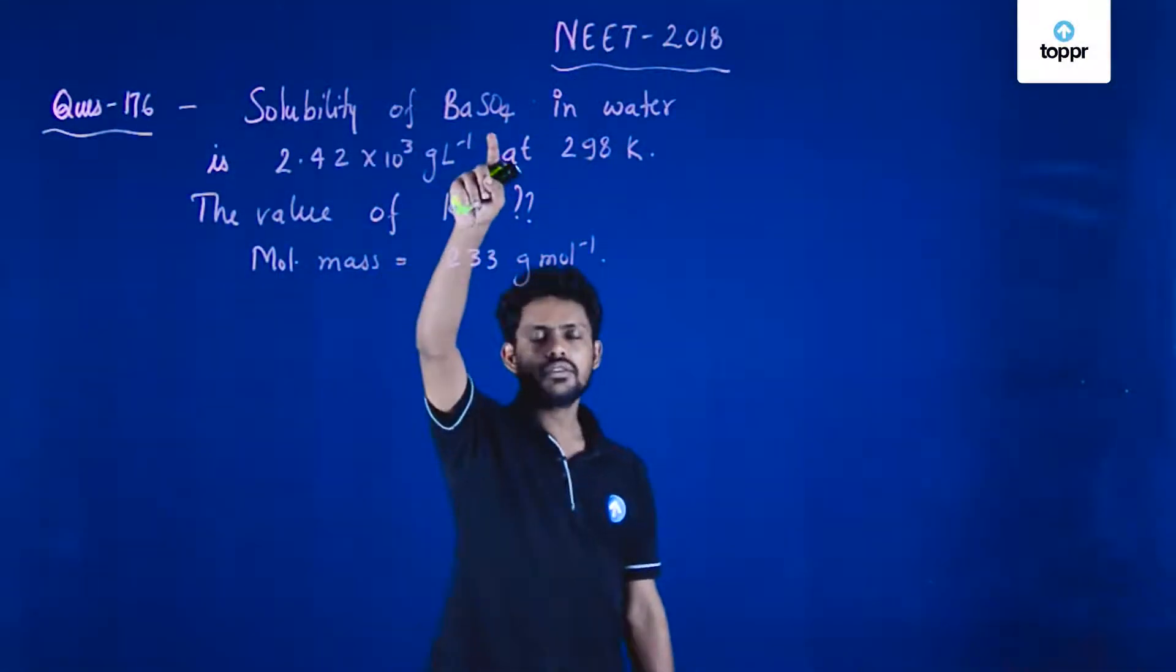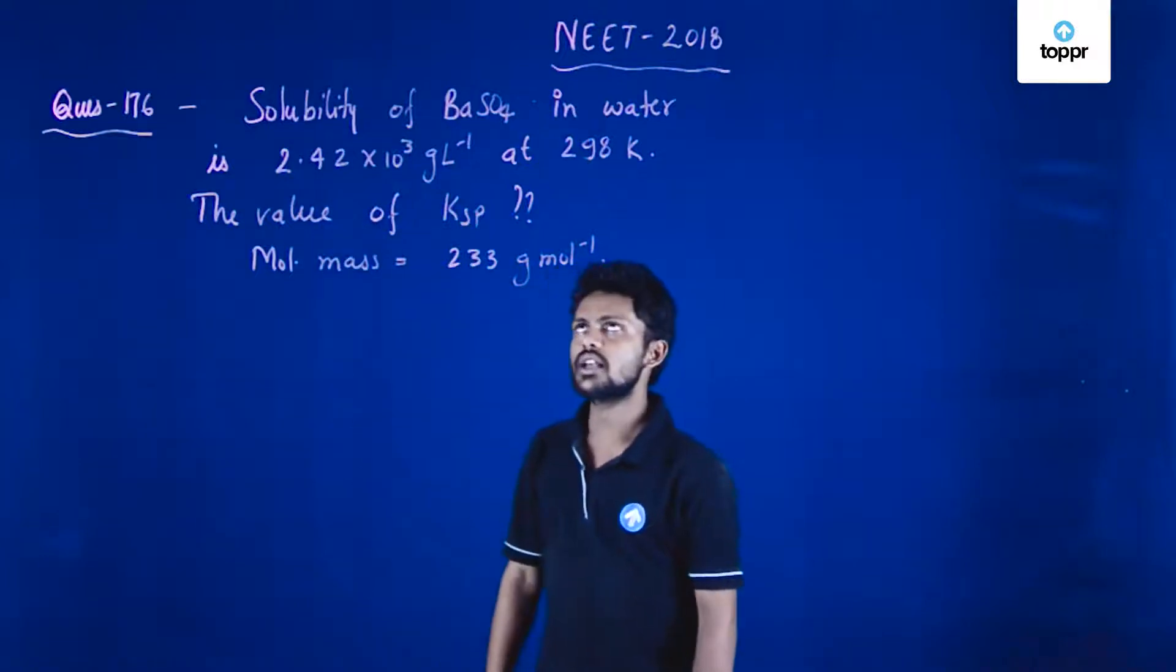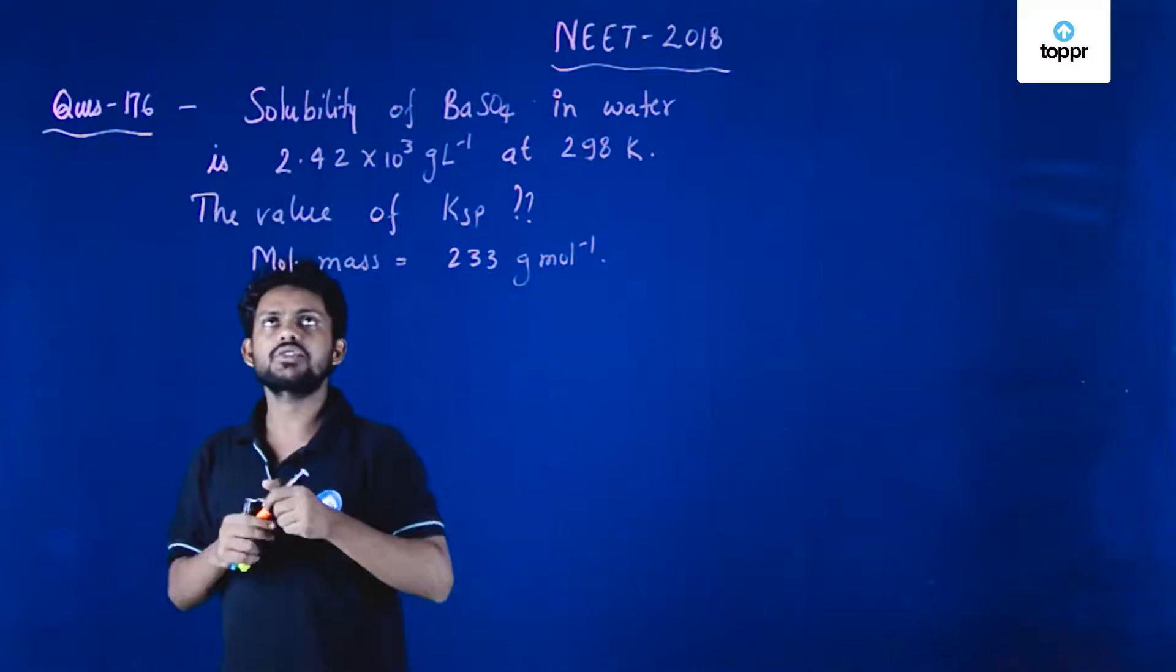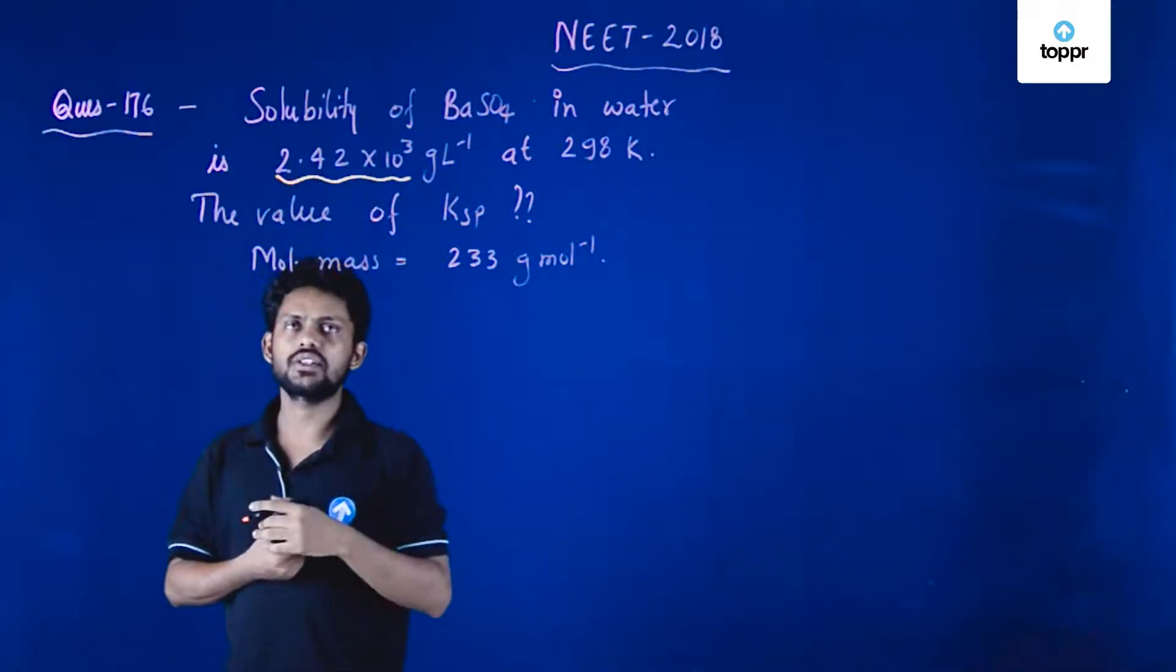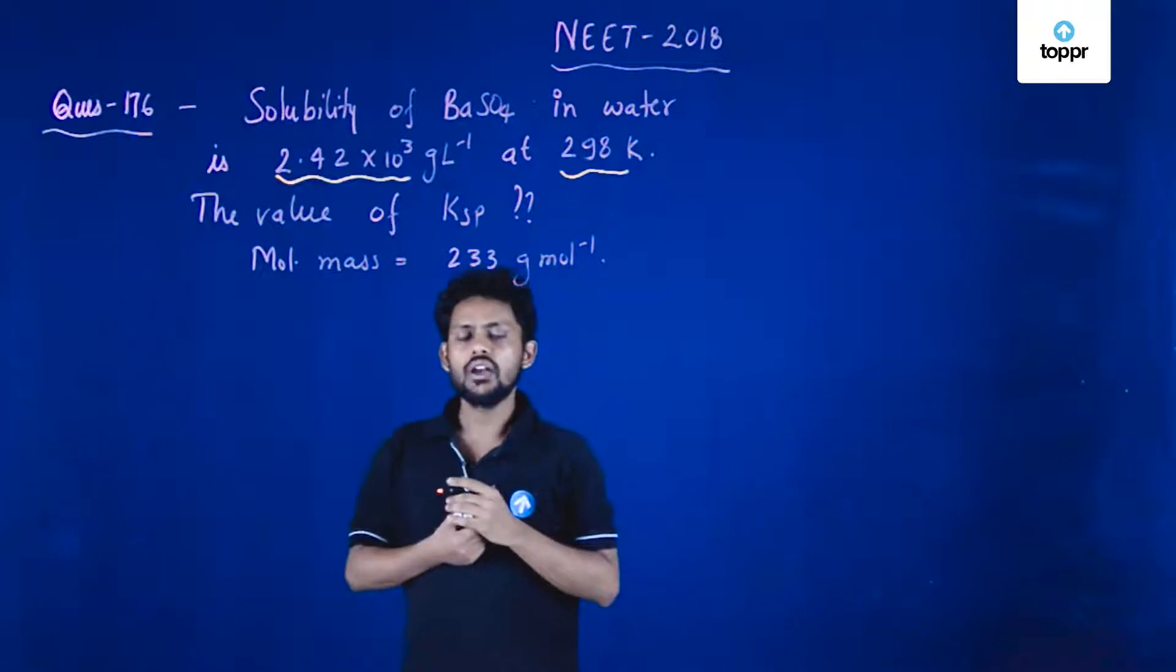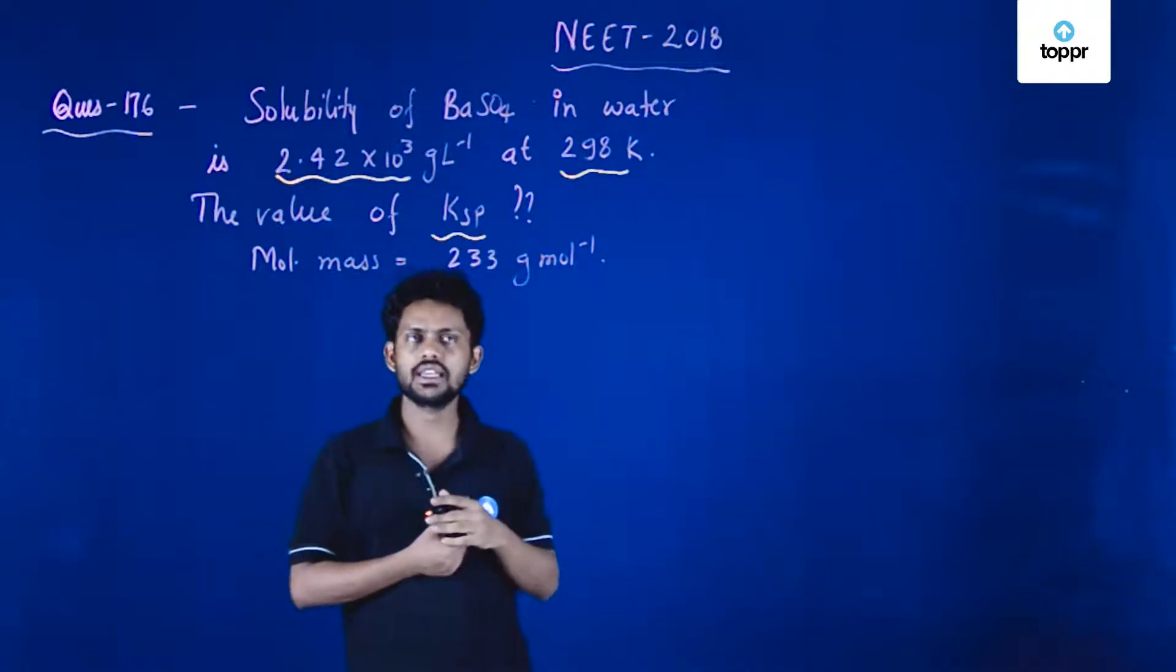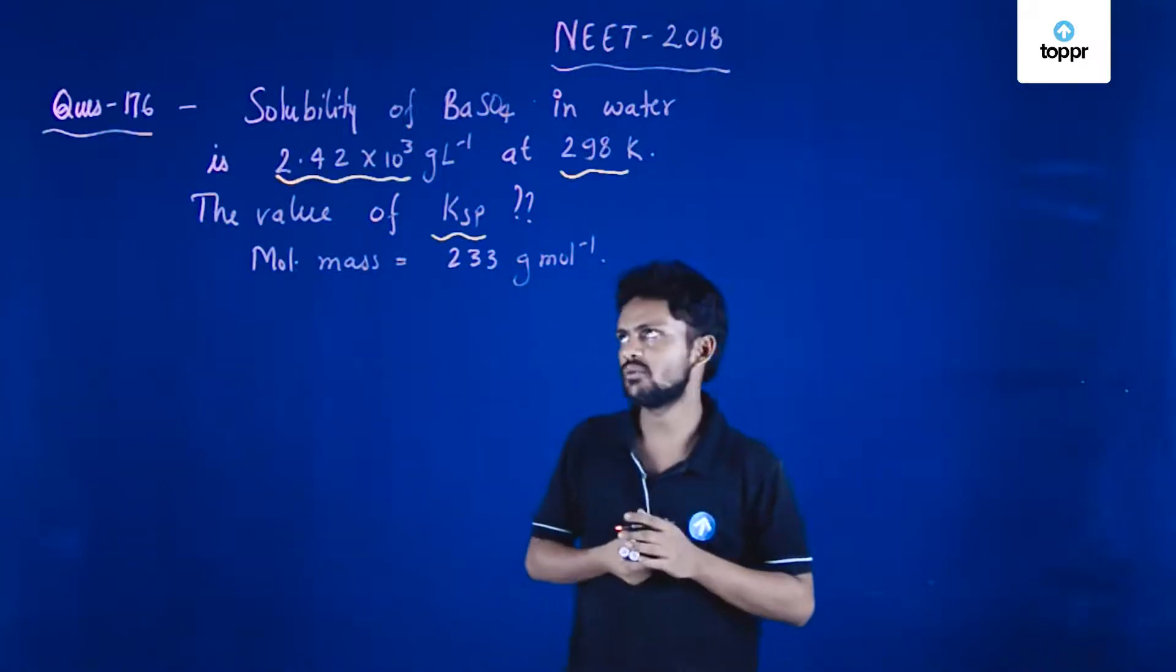This is a question from NEET 2018 examination, question number 176. It says that solubility of barium sulphate in water is 2.42 × 10^-3 grams per liter at 298 Kelvin. What they have asked is what is the solubility product, that is what is the Ksp, and they have also provided the molecular mass, which is 233 grams per mole.